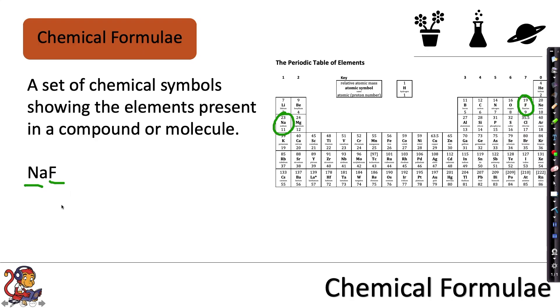We could show the elements present in glucose, for example, using a chemical formula. The chemical formula for glucose is C6H12O6. This shows us that it contains carbon, hydrogen and oxygen. And these numbers also show us that there's more than one atom of each element present. For example, there's six carbons, twelve hydrogens and six oxygens.